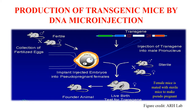To produce transgenic mice using the DNA microinjection technique, we first collect fertilized eggs from mice. Then we insert our transgene into the male pronucleus with the help of a micropipet. Once the gene has been microinjected, the embryos are transplanted into a female for the birth of the transgenic animal. These transgenic animals are then analyzed to confirm whether they contain the transgene.